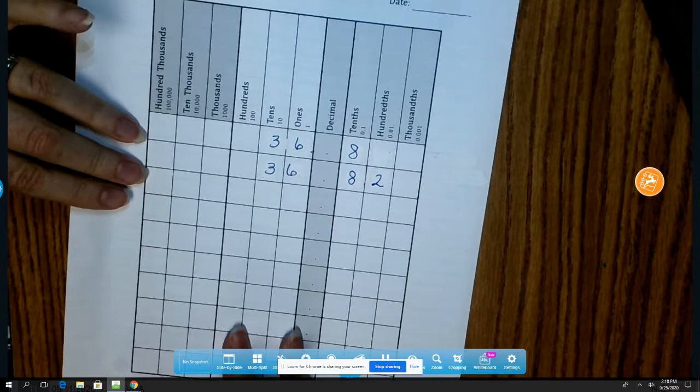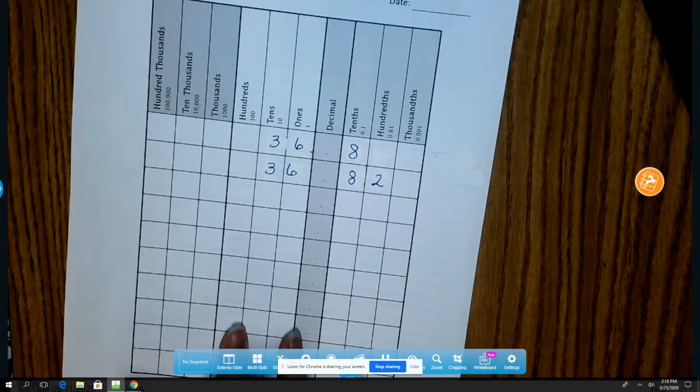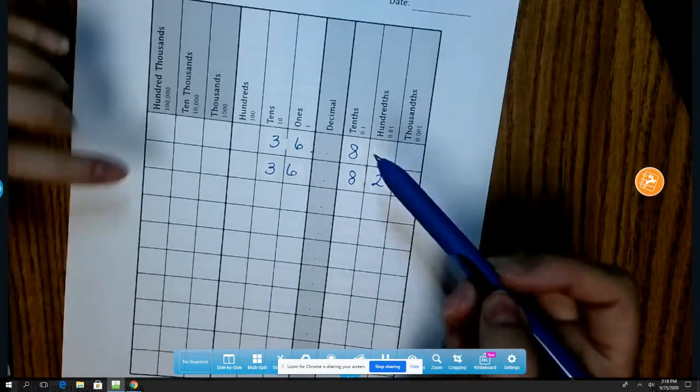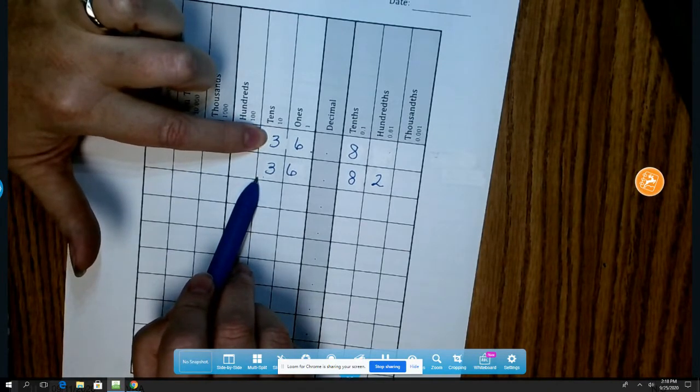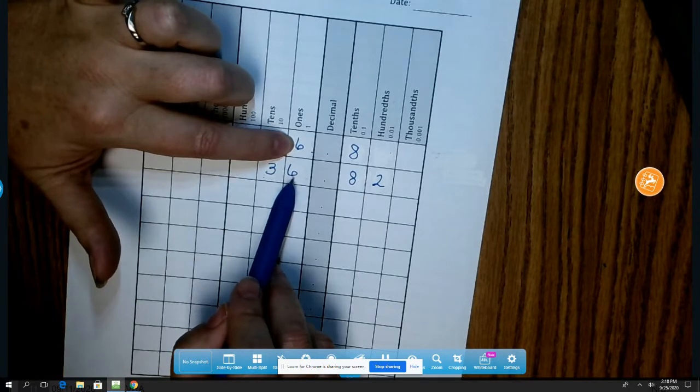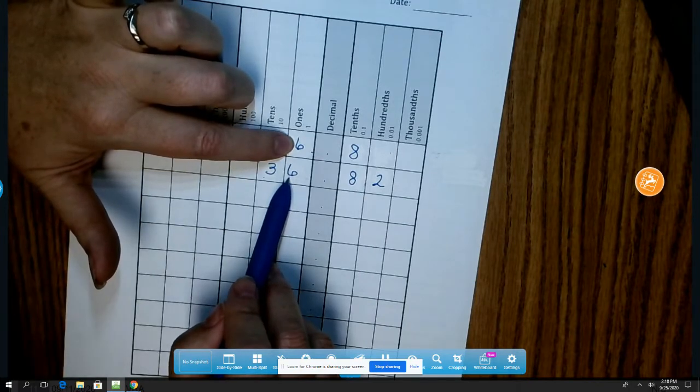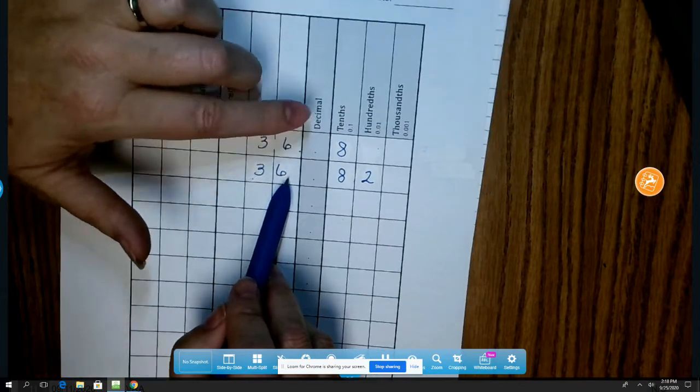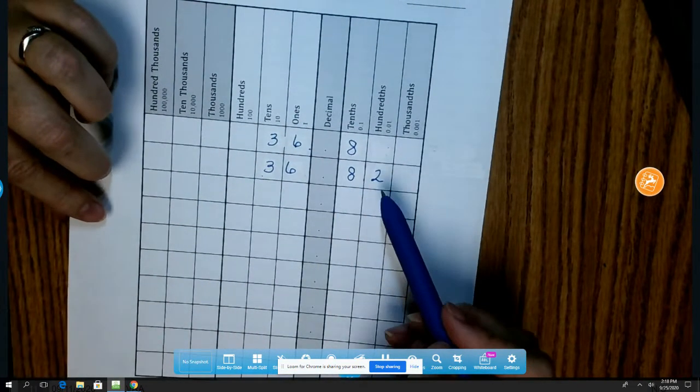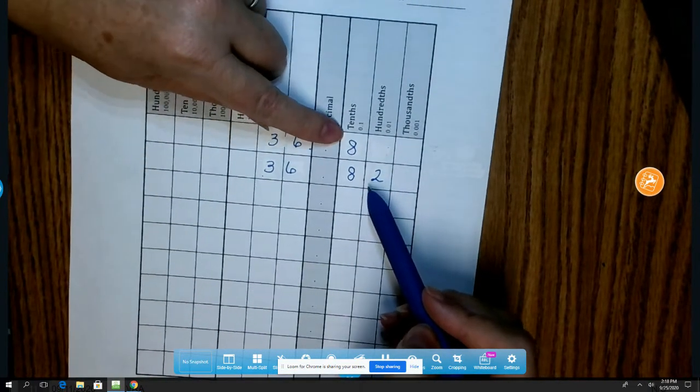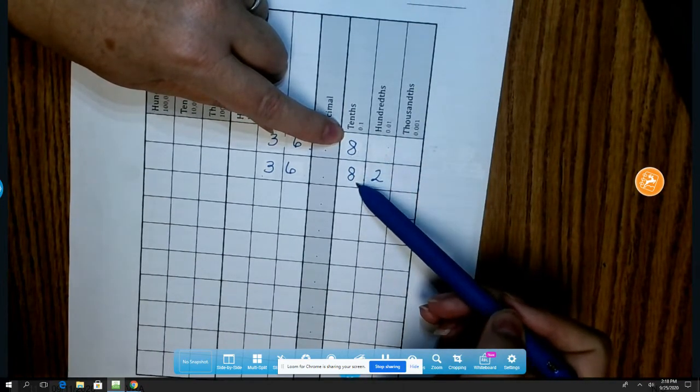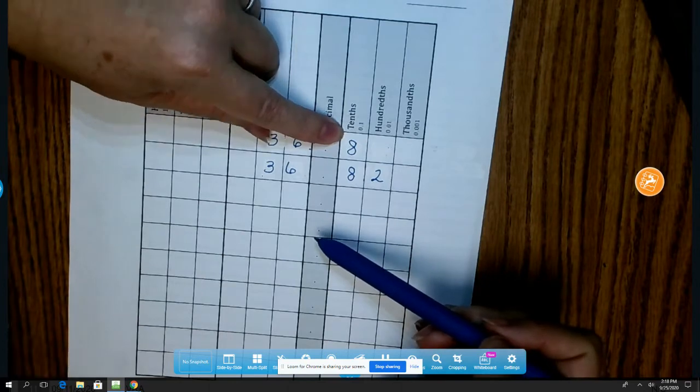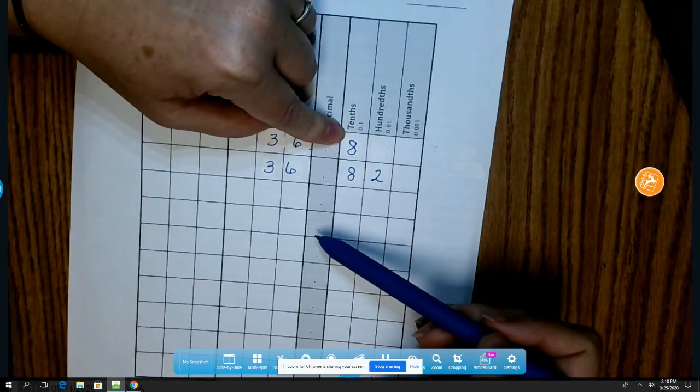So I'm going to start with the biggest number and compare those two. In the tenths place, we have a 3 and a 3. They are the same. In the ones place, I have a 6 and a 6 to compare. And again, they're equal to each other. So I'm going to move to the next place value, which is my tenths place. In the tenths place, I have an 8 and an 8, which again are equal to each other. So I need to move to the next place value.